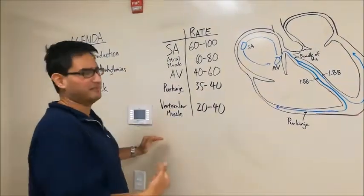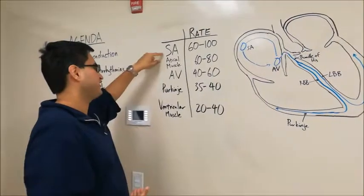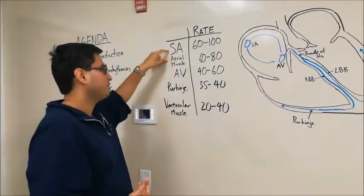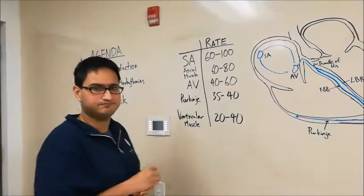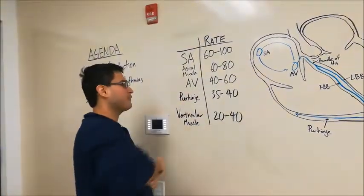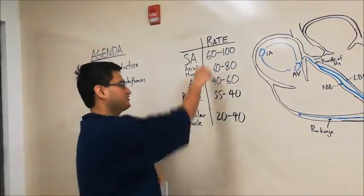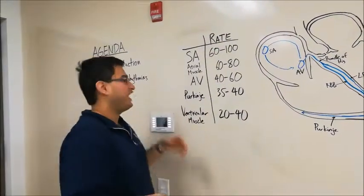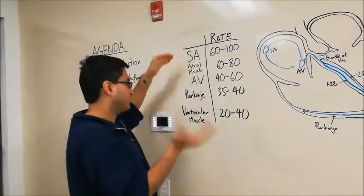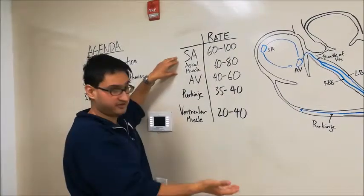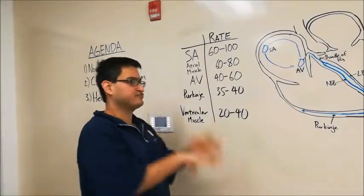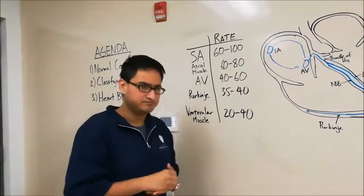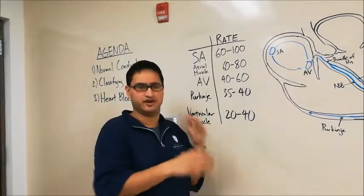And then all of these are the latent pacemakers. So if the SA node fails, the atrial node will kick in. If the atrial node fails, the AV node will kick in, et cetera. Now, what's really important about this is the order. The fastest one will take over. So if the SA node stops working, it's not like the ventricular muscle immediately took over necessarily. It's a pecking order. The fastest thing will sort of suppress the others and become the main honcho in controlling the heart's electrical activity.